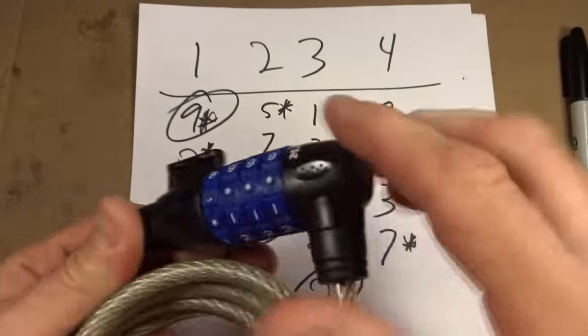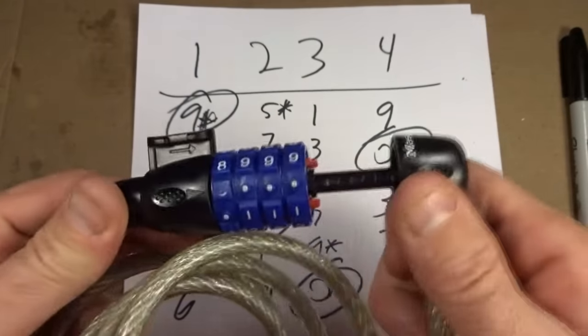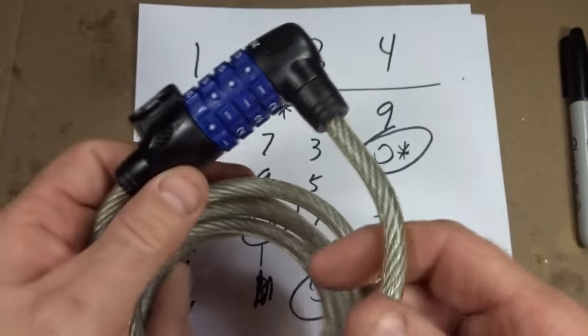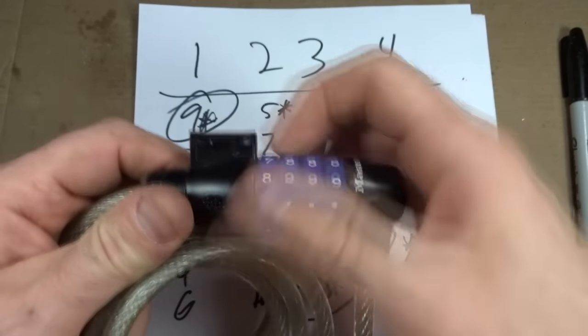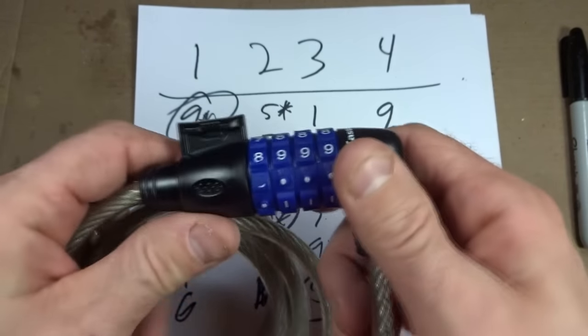And now, before you post that I'm helping bike thieves steal bikes, if they really want to steal your bike, there's it with a cable cutter. Boom, cut the cable, boom, they're gone in two seconds. They're not going to mess around with trying to figure out the combination of the lock.